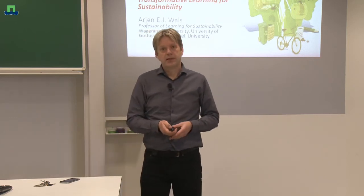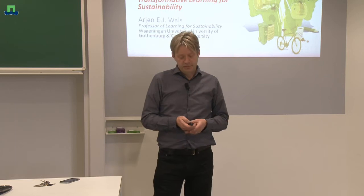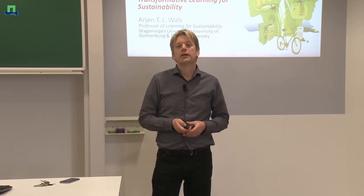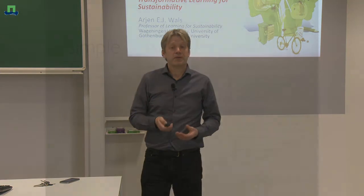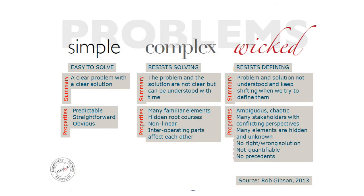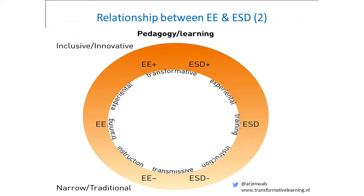With wicked problems like climate change, loss of biodiversity, and food security, this is a whole different story altogether. We've already talked about simple versus complex versus wicked problems — you can go to that module and its resources if you want to understand that better. But it is very important to understand that we have different forms of education and learning that can address wicked sustainability problems.